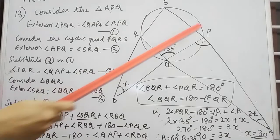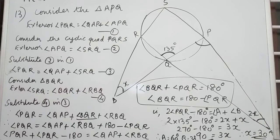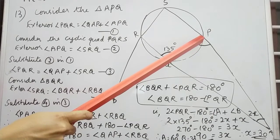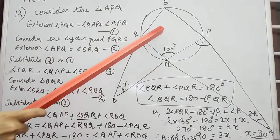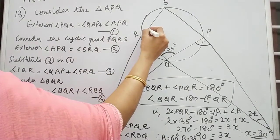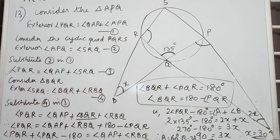Now consider the cyclic quadrilateral PQRS. Exterior angle APQ will be equal to angle SRQ. We know that the exterior angle of a cyclic quadrilateral is equal to the opposite interior angle. So those two angles will be equal. Let it be equation number 2.